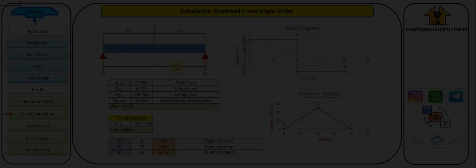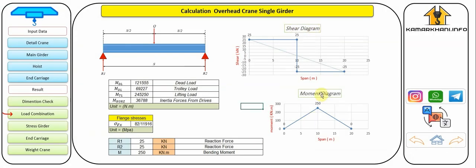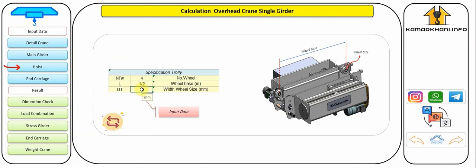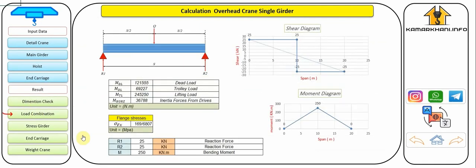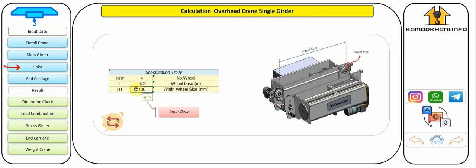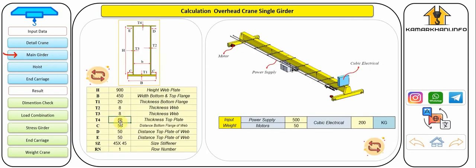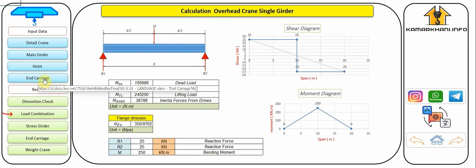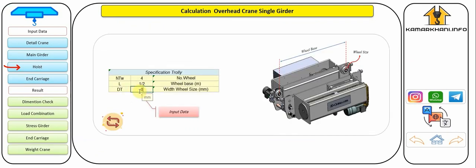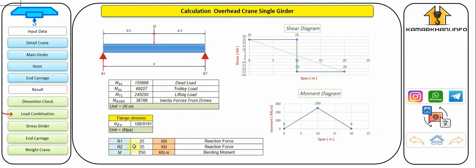At this stage, you can see the applied force resulting from dead and live load, the shear force diagram, and the bending moment. Also, the tension of the flange — which is the same tension created in the bottom plate of the bridge — was observed. This value depends on the two parameters of the width of the trolley wheel and the thickness of the lower wing of the bridge. By increasing the thickness of the lower wing and reducing the width of the trolley wheel, the stress value decreases.